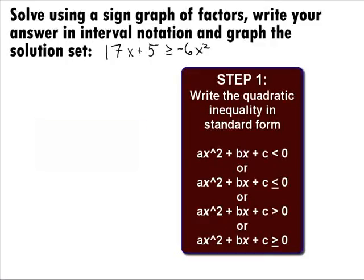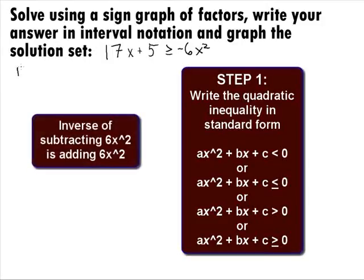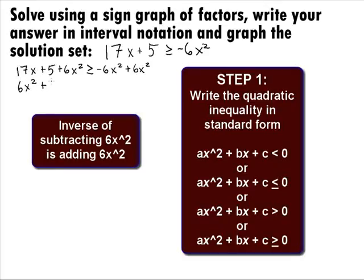It looks like we need to move the negative 6x squared to the other side. We can do this by adding 6x squared to both sides, giving us 6x squared plus 17x plus 5 is greater than or equal to 0.